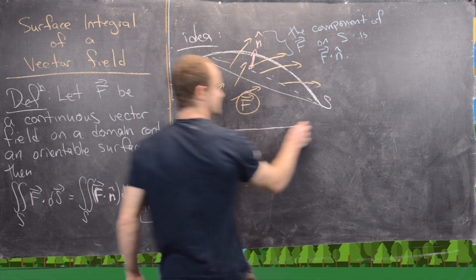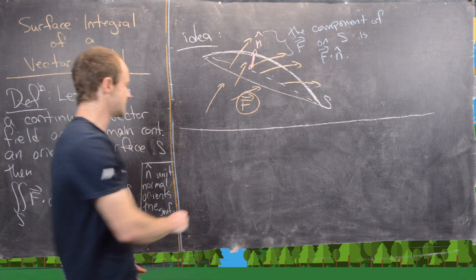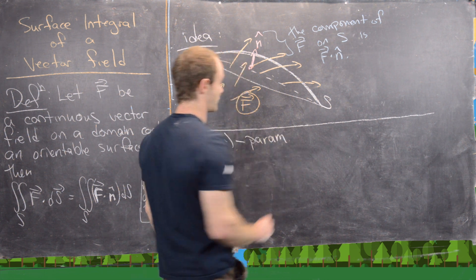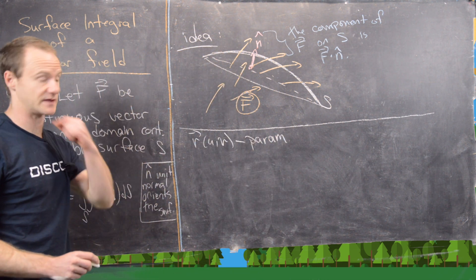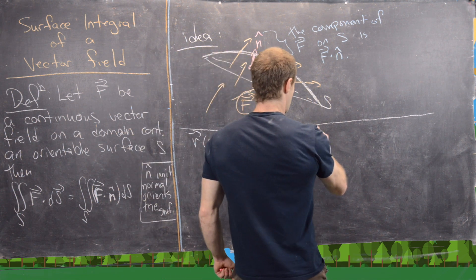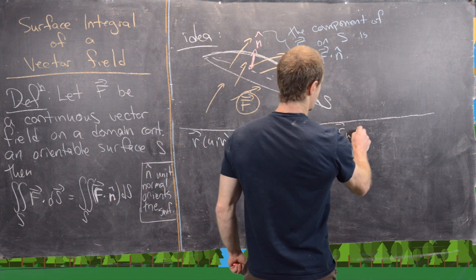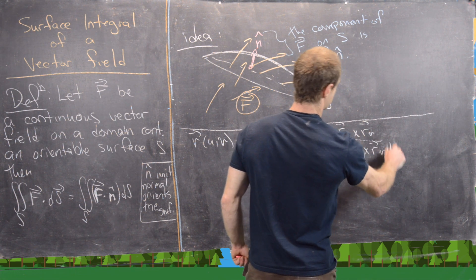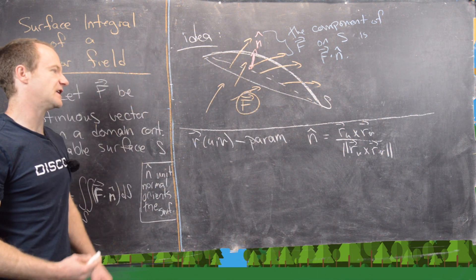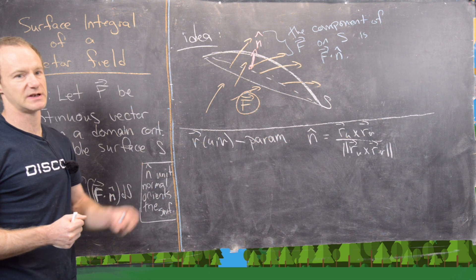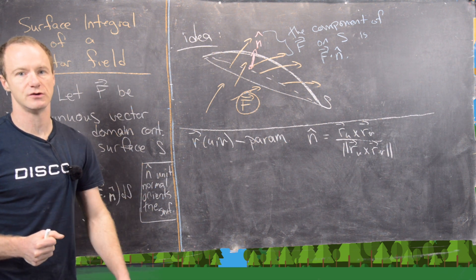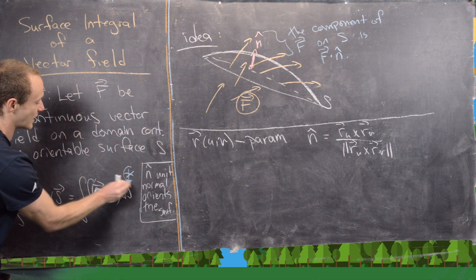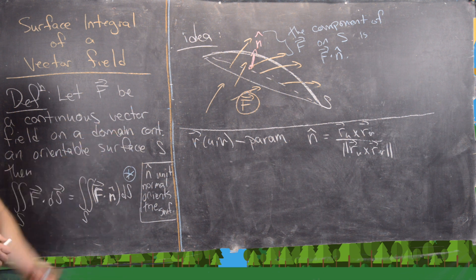Now let's build a calculatable formula. Recall that R(u, v) can parametrize a surface, and we have the normal vector n equal to R_u cross R_v over the magnitude of R_u cross R_v. We looked at that in a previous video — we argued why R_u cross R_v is perpendicular to the surface, and then we turn it into a unit vector by dividing by that magnitude.